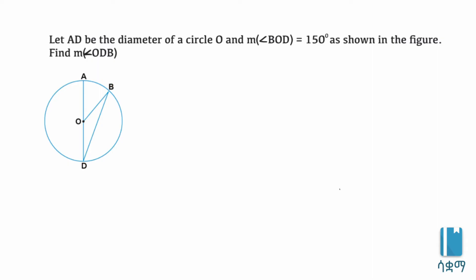Angle BOD is 150 degrees. The central angle is formed by two radii, with its vertex at the center of the circle. The central angle BOD is equal to the arc BD.